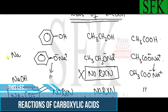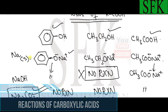The first reaction is with sodium metal. Sodium metal is highly reactive. Phenol is acidic, ethanol is acidic, and ethanoic acid is also acidic — they all give a positive test with sodium metal. Sodium metal reacts with phenol to give sodium phenoxide. This organic product is important and has been frequently asked in past papers.